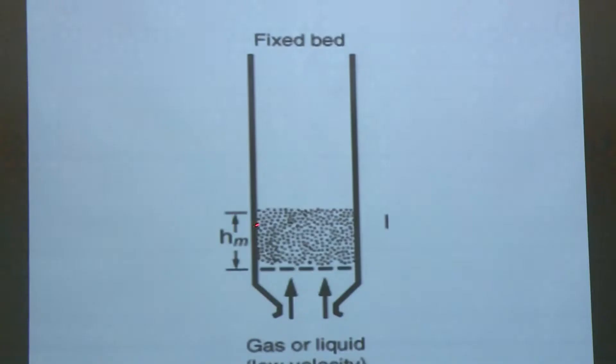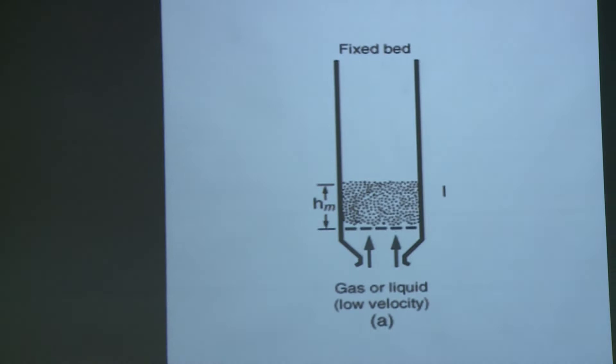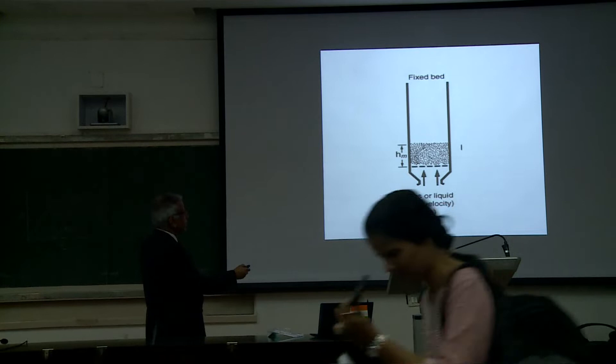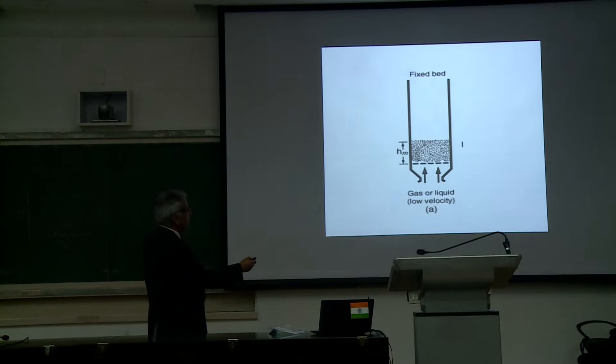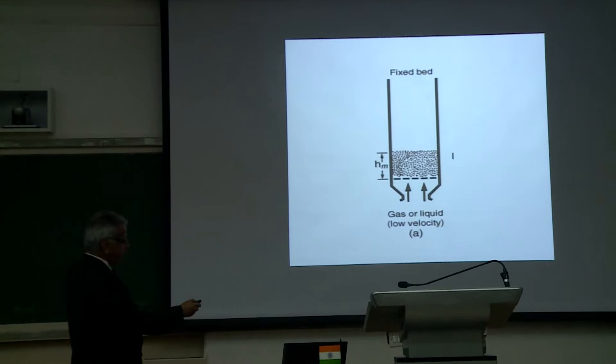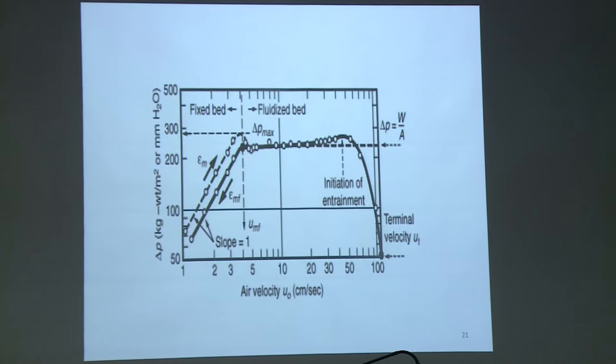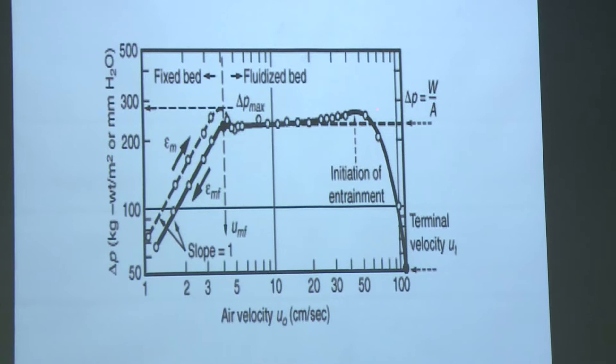This is more or less minimum fluidization, and if you increase the velocity further, then bed expansion occurs. Because the level that you see here keeps on rising — the particle-to-particle distance increases, voidage increases. Last time I explained that eventually at minimum fluidization velocity the pressure drop more or less remains constant, and at this point the particles start leaving the bed.